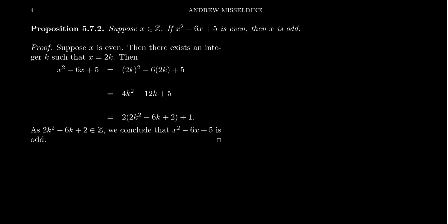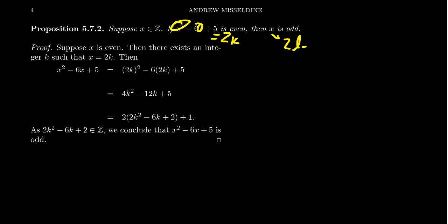Let's see some other examples. For our next proposition, suppose that x is an integer. If x squared minus 6x plus 5 is even, then x is odd. This is similar to the one we just did. If I assume that x squared minus 6x plus 5 is even, I know this number equals 2k — but I have x's and x squareds. Trying to get x to look like some 2l plus 1 is going to be very, very awkward. The other direction is actually much easier.